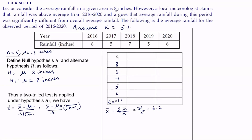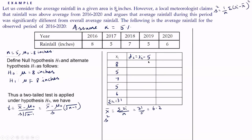Now let us find the sample variance s². In class 11 we studied the formula s² = (1/n) × Σ(xᵢ − x̄)². But that calculation becomes slightly tedious, so here we will use the assumed mean formula, which we also studied in class 11. Let dᵢ = xᵢ − assumed mean, where we take the assumed mean as 5.